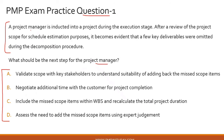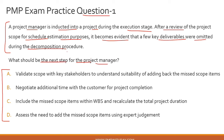Now let's start with question number one. Please read the question and try to answer it before we solve this together. A project manager is inducted into a project during the execution stage. The project has moved from initiation to planning and is now in execution. After a review of the project scope for schedule estimation purposes, it becomes evident that a few key deliverables were omitted during the decomposition procedure. To help you solve this question, you need to know what decomposition is: it is the process of breaking down the scope of a project into manageable work packages, and the output is typically a Work Breakdown Structure or WBS.